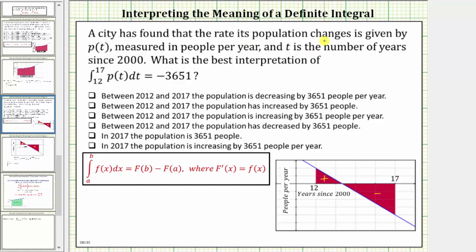A city has found that the rate its population changes is given by the function little p of t, measured in people per year, and t is the number of years since the year 2000. What is the best interpretation of the integral of little p of t from 12 to 17 equals negative 3,651?